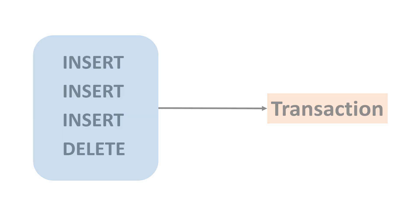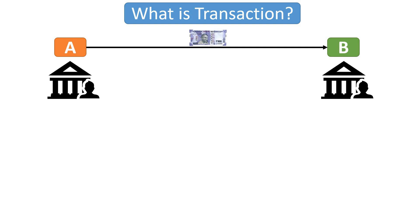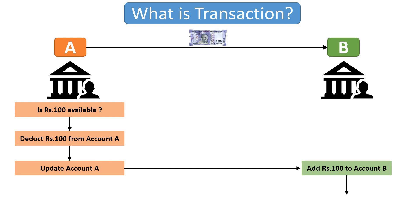Let's understand a transaction with a real-life example. Suppose we have bank account A and bank account B, and we want to transfer Rs. 100 from account A to account B. First we check the available balance of account A — whether Rs. 100 is available or not. If the amount is available, we deduct Rs. 100 from account A and update its balance. Then we add Rs. 100 to account B and update the balance of account B.